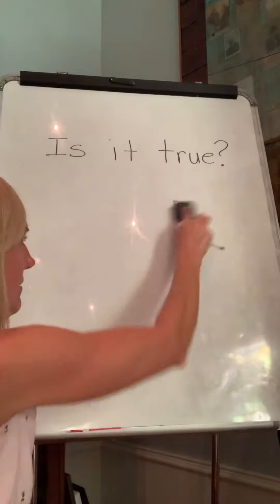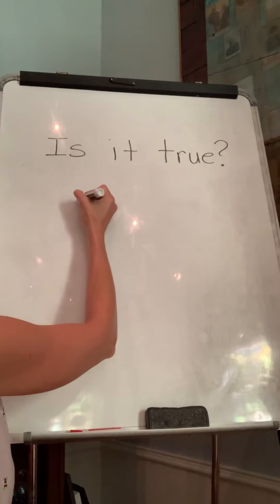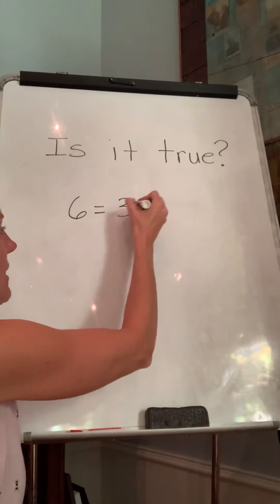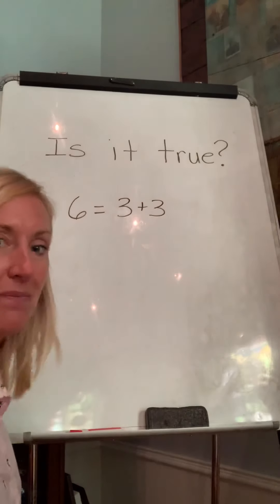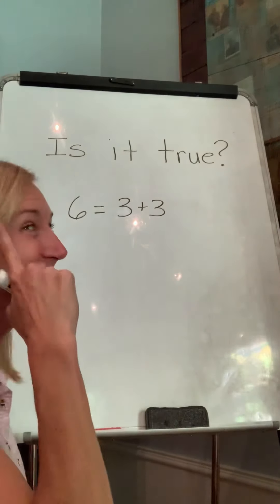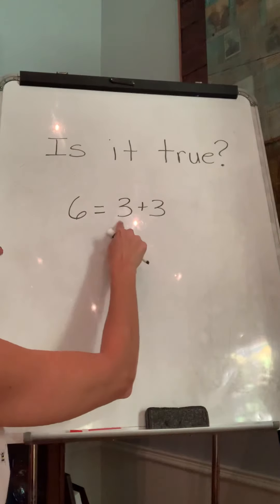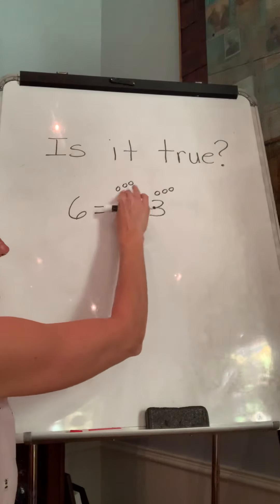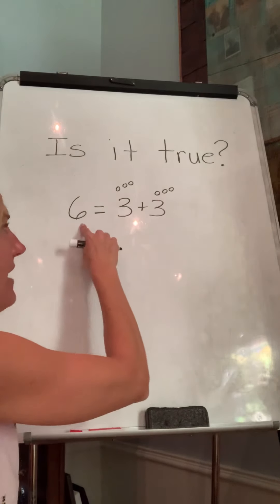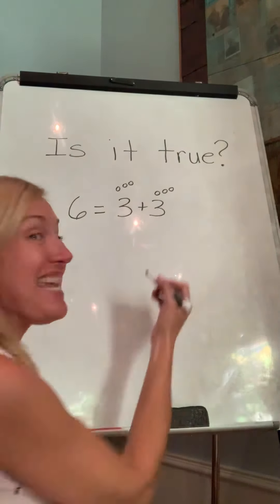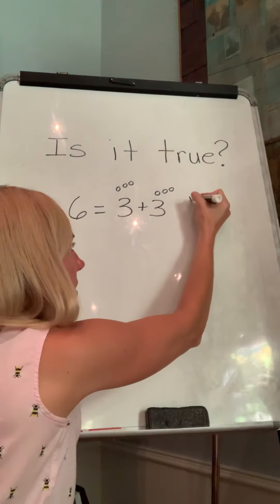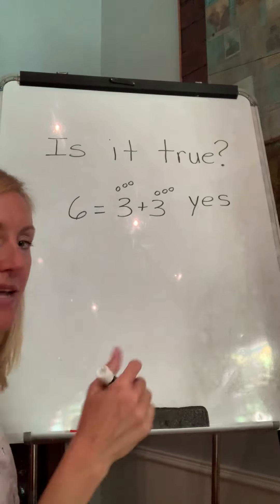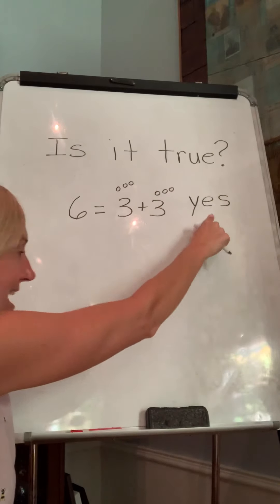What about six equals three plus three? I know some of you already know this. So six — let's check it out. Three, and here's another three. So three, four, five, six. Is that one correct? Then we're going to write yes. And you know how to write yes. That one is true. Is it true? Yes.